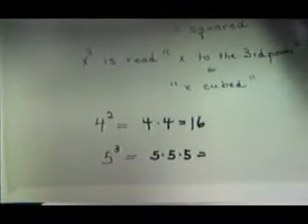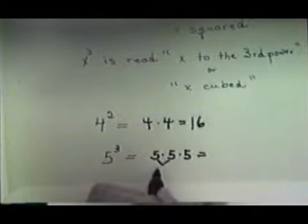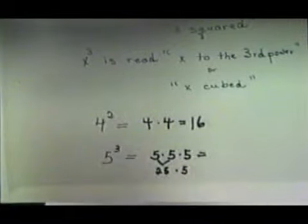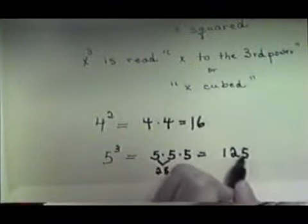Now to multiply it out, let's multiply the first two fives together. That would give us 25, and then we've got to multiply 25 times 5. If we multiply 25 times 5, if you need to, come over to the side and do that. But you'll end up getting 125. So 5 cubed is 125.